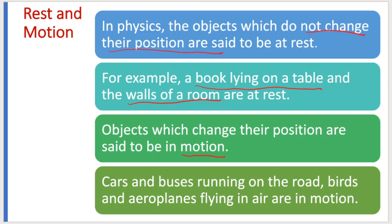Objects which change their position are said to be in motion. Examples: cars and buses running on the road, birds and aeroplanes flying in the air are in motion.